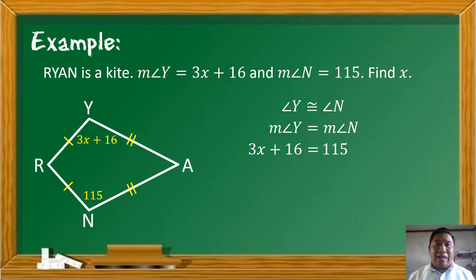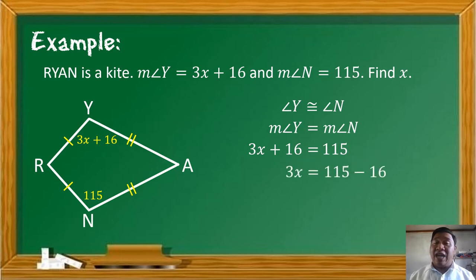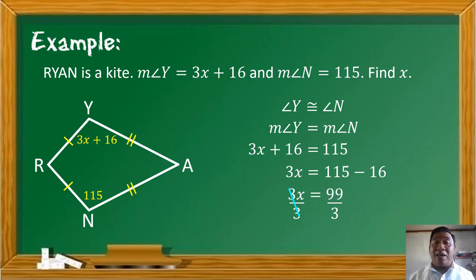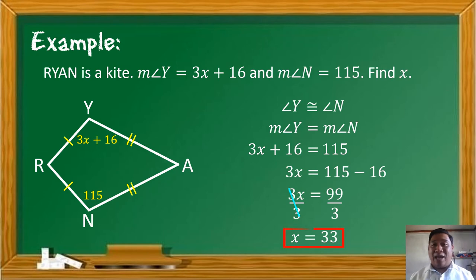Now we transpose 16 to the other side — when moved to the right side, it becomes negative. The resulting equation is 3X equals 115 minus 16, which is 99. So 3X equals 99. To solve for X, we divide both sides by 3. X equals 99 divided by 3, which is 33. That is the value of X.